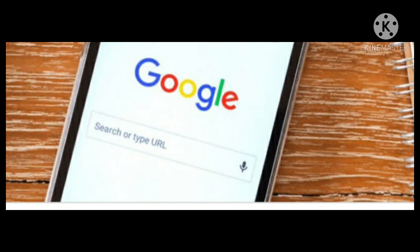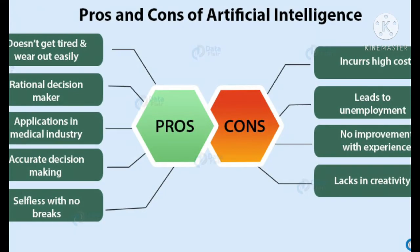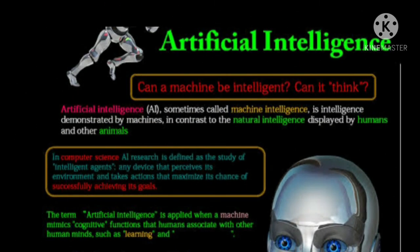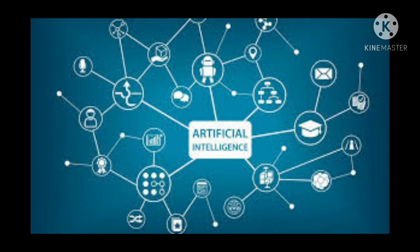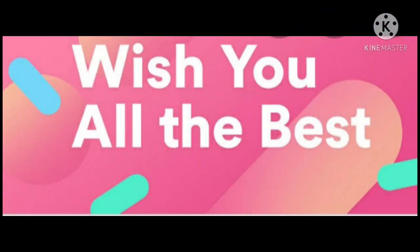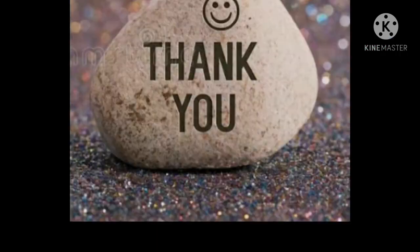That's about the advantages and disadvantages of artificial intelligence. Keep in mind the goal of AI: it is to develop computers that are smart and can take decisions themselves to solve any problem. We have completed our last chapter of IT, which is artificial intelligence. Write down the notes in your textbook and learn it well. All the best children, take care, bye.